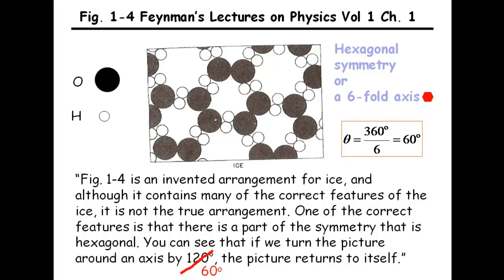Although the intention of Feynman is to show the hexagonal symmetry, the figure is incorrectly centered on a three-fold axis marked by this little red triangle.